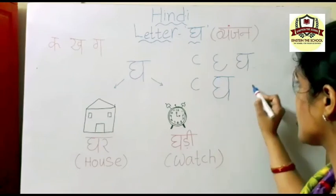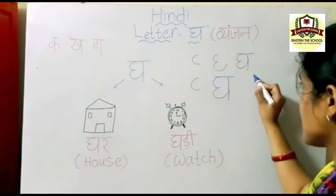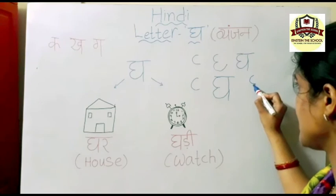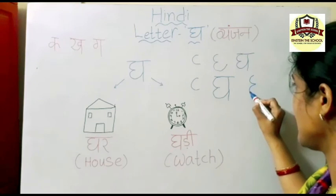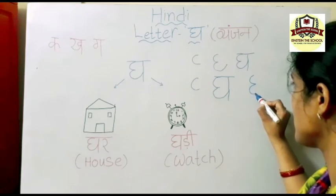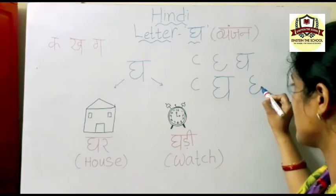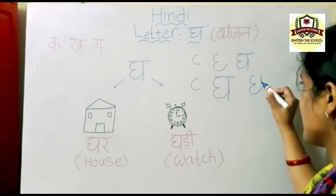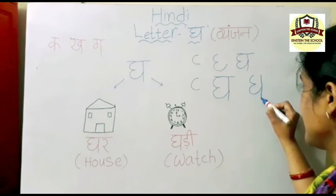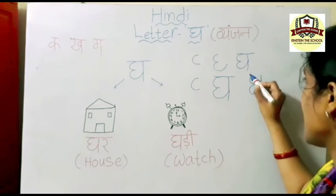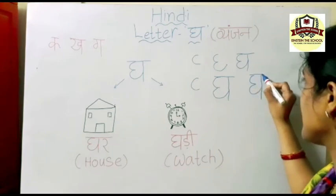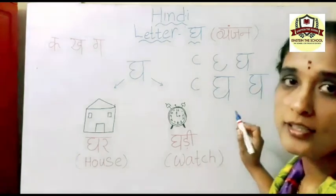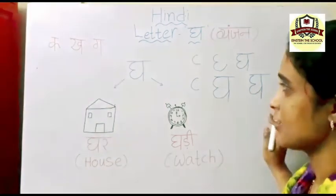Understood children? First small c, again one more small c. Go up to here like this, and write a standing line and a sleeping line overhead. This is the letter Gha.